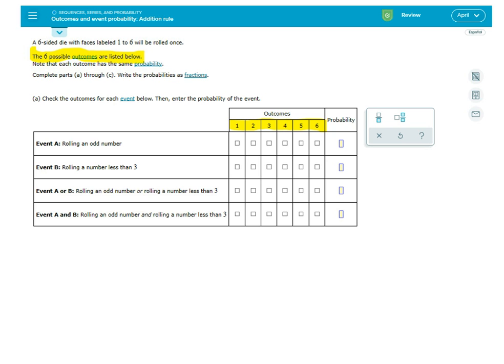Now they want you to answer parts A through C and write the probabilities as fractions. For the first one they want the event of rolling an odd number. What you're simply going to do is click on each box that is an odd number.